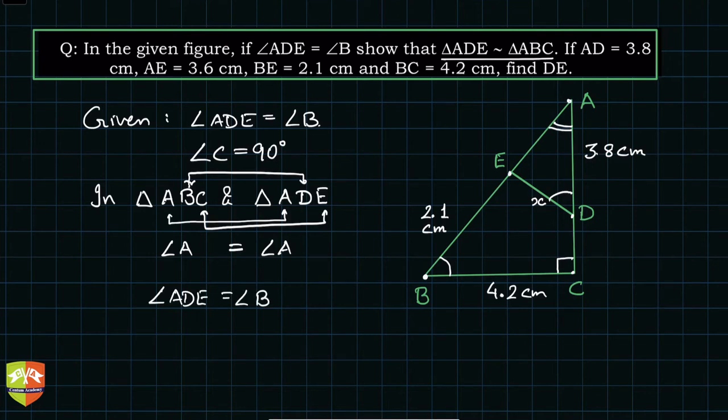Right, so one angle each, or two angles are equal in the two given triangles. Therefore we can conclude triangle ABC is similar to triangle ADE. These two triangles are similar by AA similarity criterion.